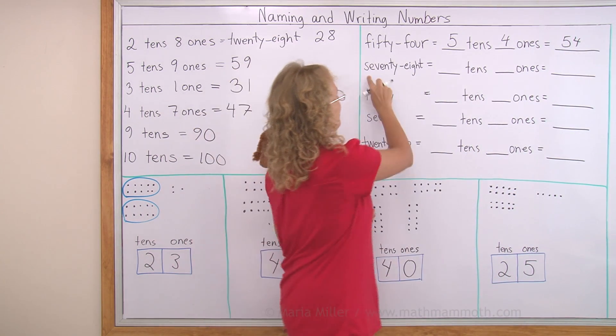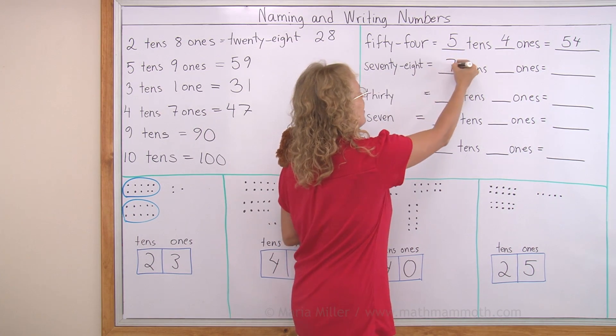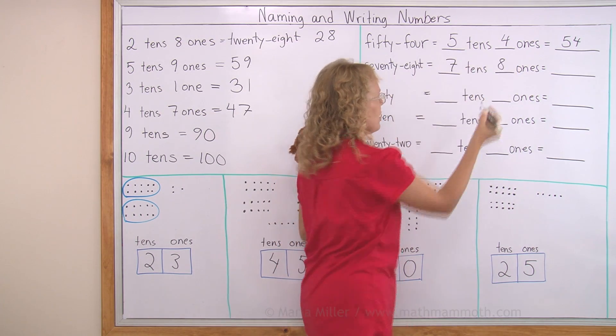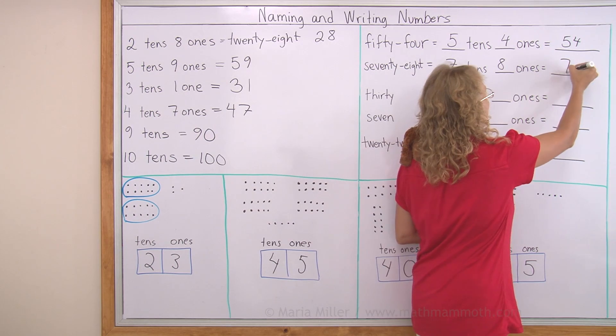78. 70 means 7 tens. And then, 8 ones. And we write it as 7, 8.